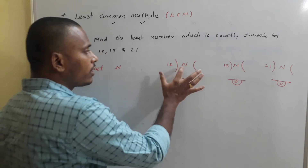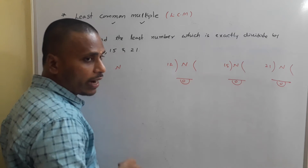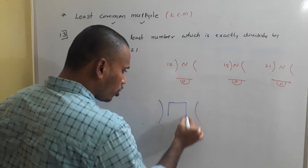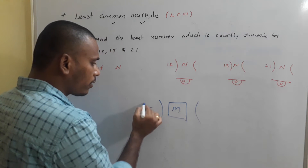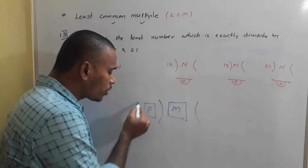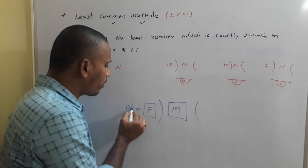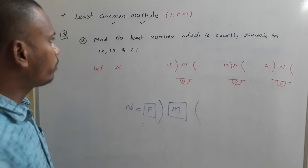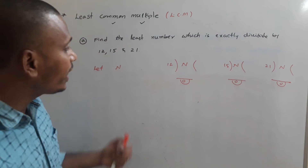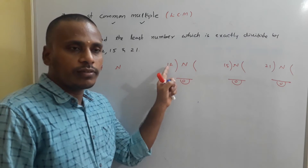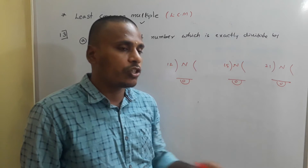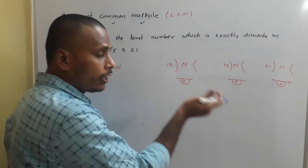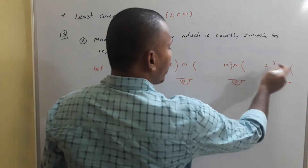This is the position of multiples and this is the position of factors. For HCF we find the factor side; for LCM we find the multiple side. N is divisible by 12 means N is a multiple of 12. N is a multiple of 15. N is a multiple of 21. Since N is a common multiple of 12, 15, and 21, and the question asks for the least, N is the LCM of 12, 15, and 21.